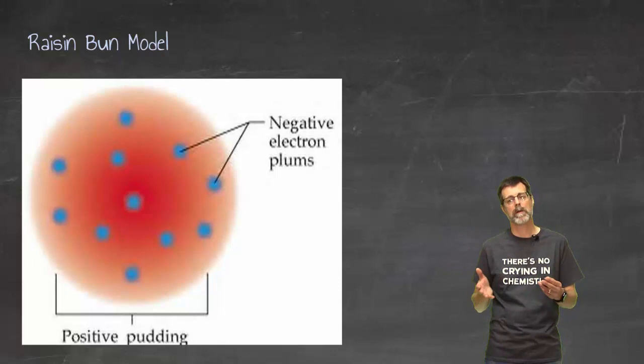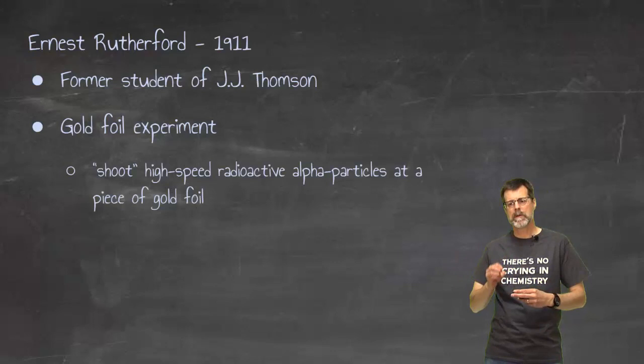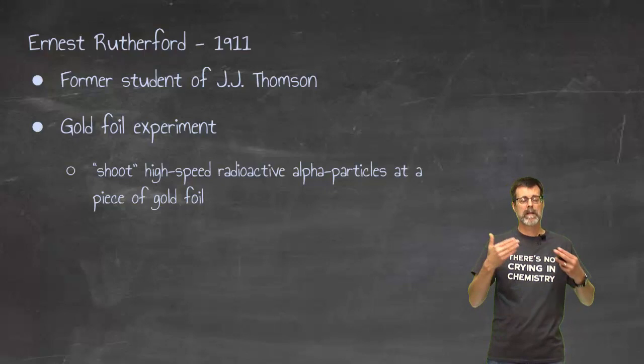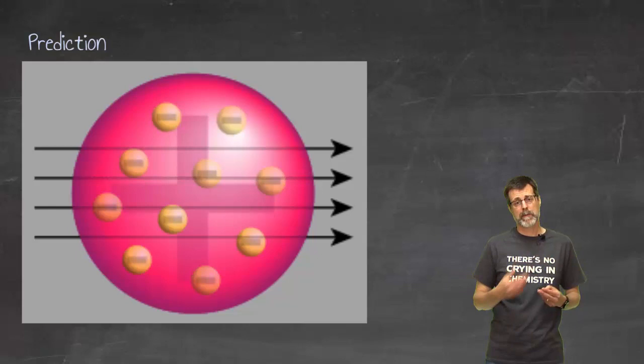Ernest Rutherford tested that theory a little bit more. He was working with radiation and what he was doing was he sent beams of radioactive particles at gold foil that he thought was made of Thompson atoms. His prediction was that the particles would go straight through the atom. There wasn't really anything strong enough, big enough, heavy enough, dense enough to stop those particles.